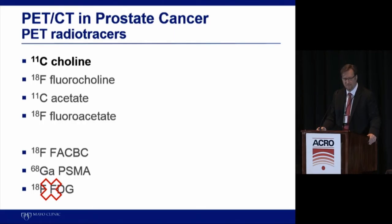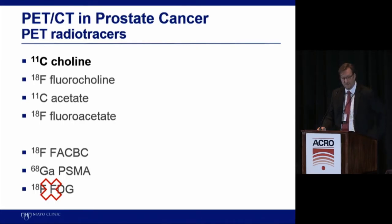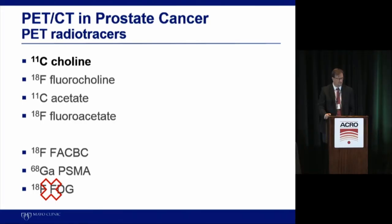Advanced imaging techniques to identify prostate cancer recurrence location include C11 choline, which has been heavily emphasized at our institution. A few years ago, the FDA changed rules requiring FDA approval rather than just IRB approval for novel tracers if you want full billing. We submitted an application with an $1.8 million check, requested a waiver, and it took three to six months to get approved. C11 choline has been used in Europe for a decade. Gallium-68 PSMA is now being used extensively in Europe and Australia.